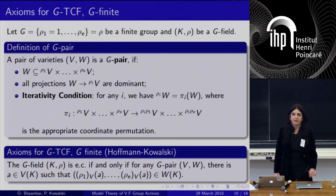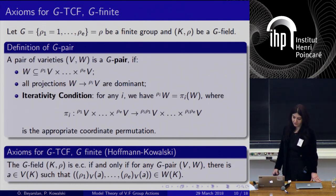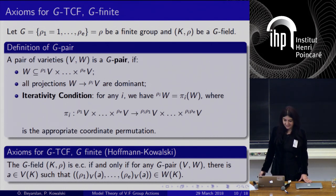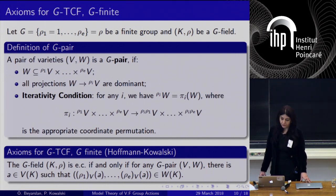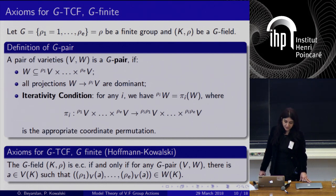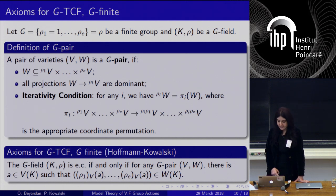Hoffmann and Kowalski have a result about finite axioms for finite G-TCF: a G-field (K, ρ) is existentially closed if and only if for any G-pair (V, W), there is a point A in V(K) such that (ρ₁(A), …, ρₙ(A)) are all in W(K).